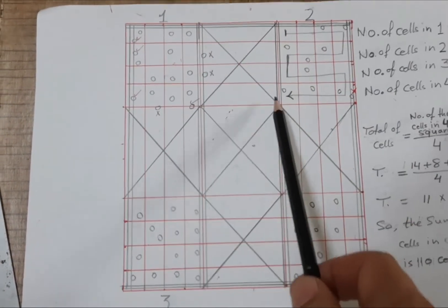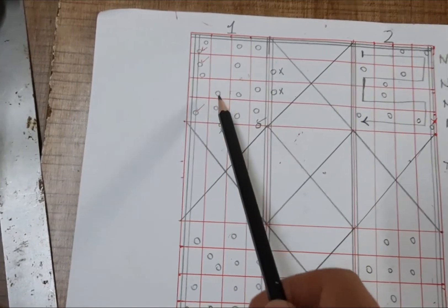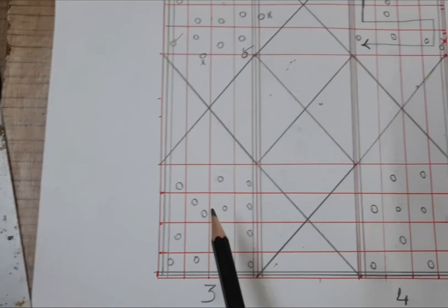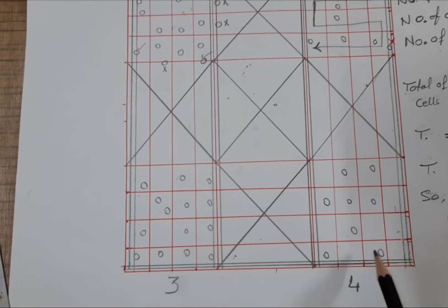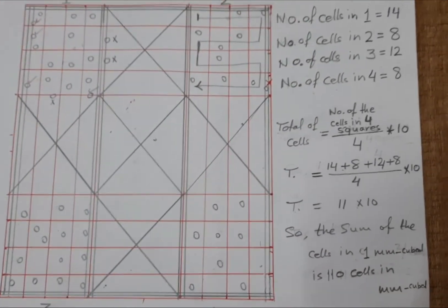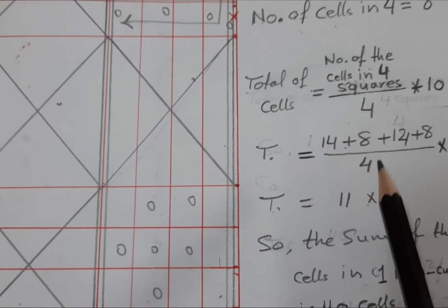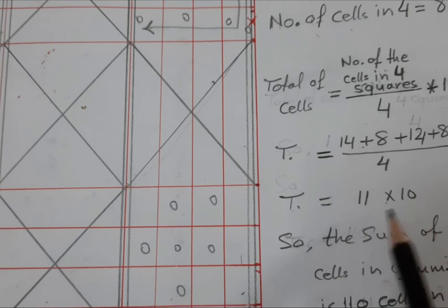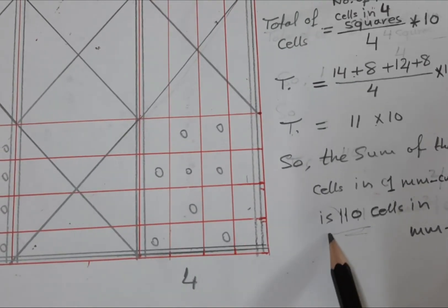For example, if in the first square we have 14 cells, in the second square 8 cells, in the third square 12 cells, and in the fourth square 8 cells — we collect the total from all 4 squares and divide by 4. The average is 11. So 11 multiplied by 10 gives 110 cells per 1 mm cubed.